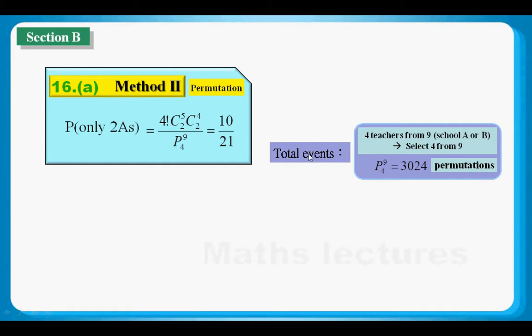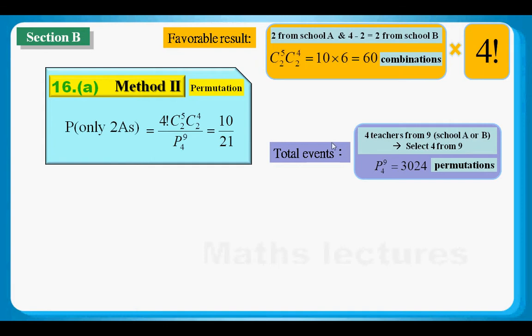What is the change in the numerator — the favorable events? We have 60 combinations, meaning 60 groups of people chosen from nine. Each group has four teachers, and the orders are counted as follows: for the first place we have 4 choices, the second place 3 choices, the third place 2 choices, and the final place 1 choice — that is 4 times 3 times 2 times 1, which is 4 factorial, equaling 24. So for 60 combinations, we multiply by 4 factorial to get all permutations.